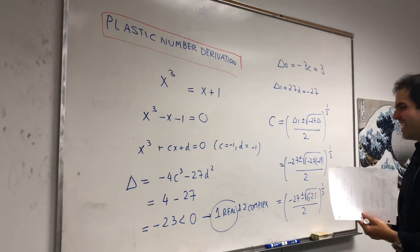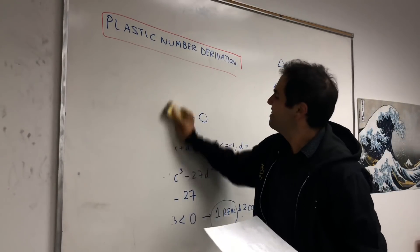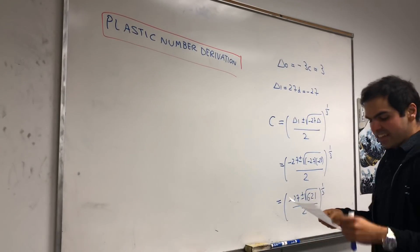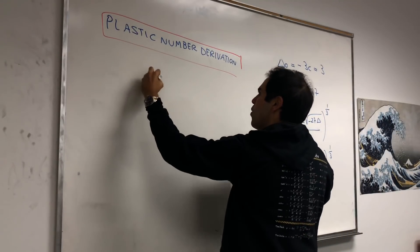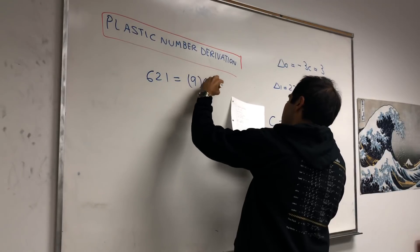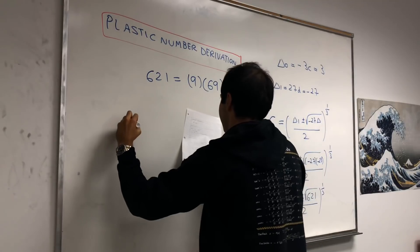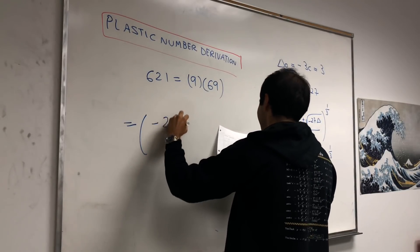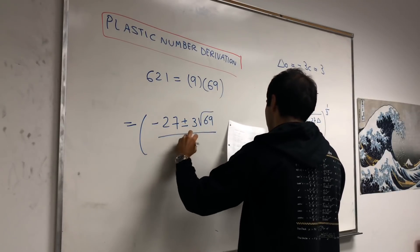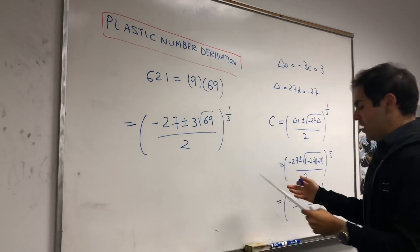And luckily, I have it on my notes. I definitely did not do that in my head. Anyway. Let's simplify this a little bit. Fortunately, 621, you can factor this as 9 times 69. So, the square root of that, it's 3 times square root of 69. So, it's minus 27 plus or minus 3 square root of 69 over 2. All right.